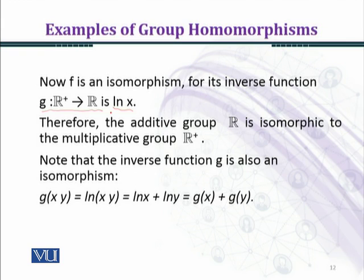And this map, we have found the inverse of f. If you compose f with g, then you will get the identity function. Therefore, the additive group ℝ is isomorphic to the multiplicative group ℝ⁺. Note that the inverse function g is also an isomorphism, because the inverse of g will give you f.